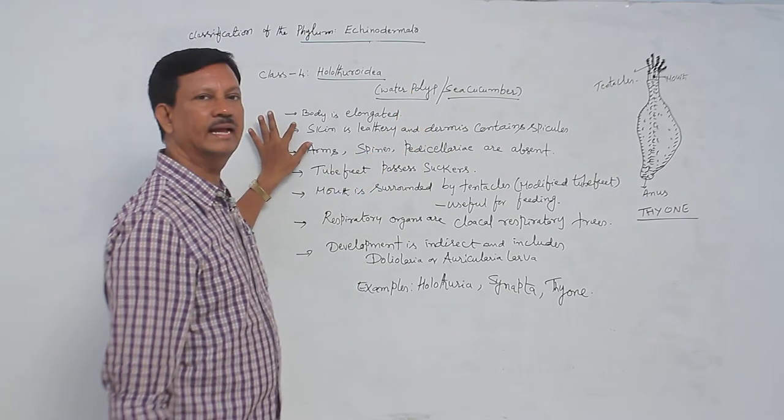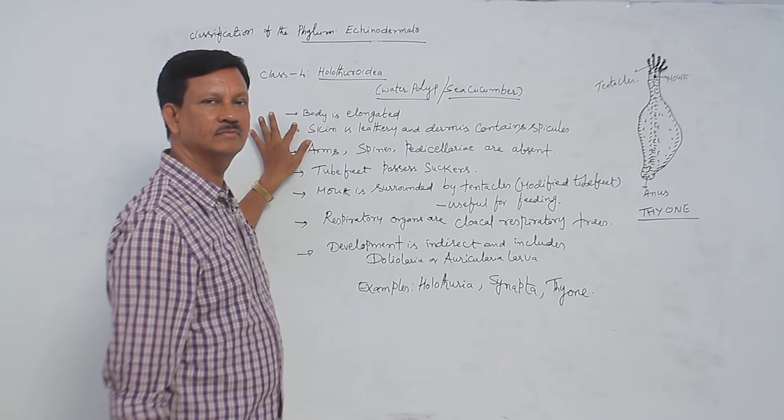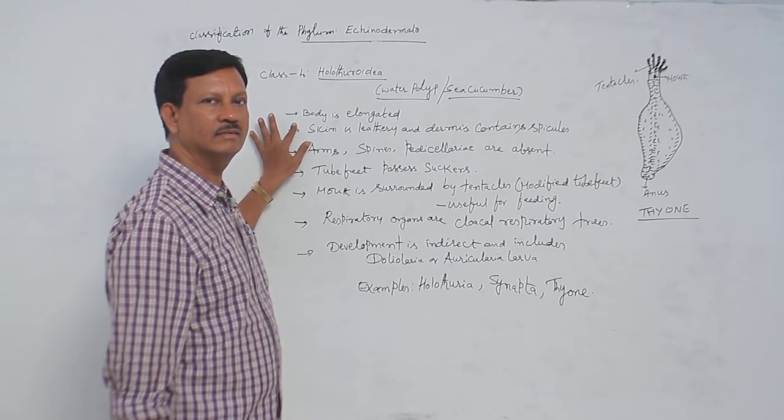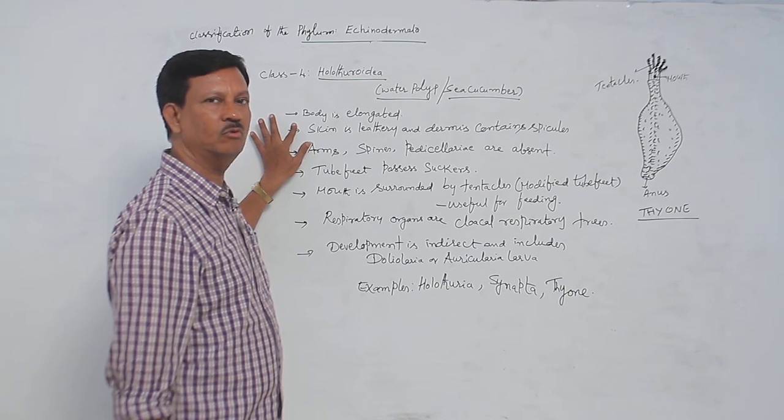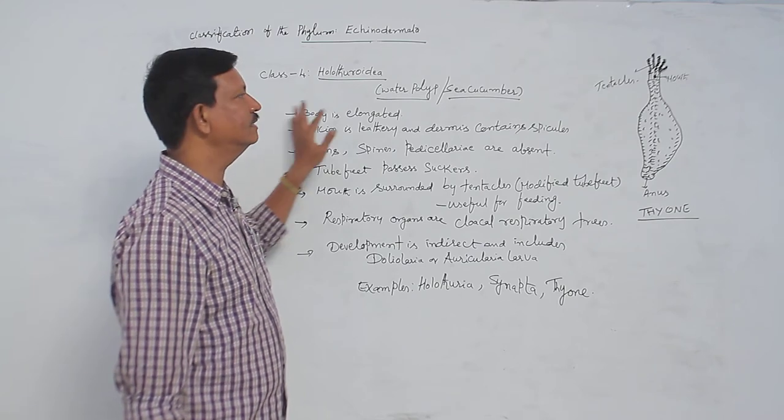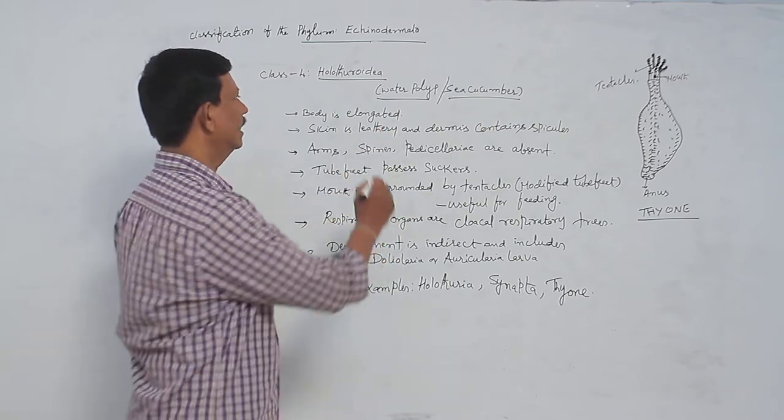Its body is elongated when compared to other class animals. Star-like and round and ovoid shapes are present in other classes, but here the body is elongated.